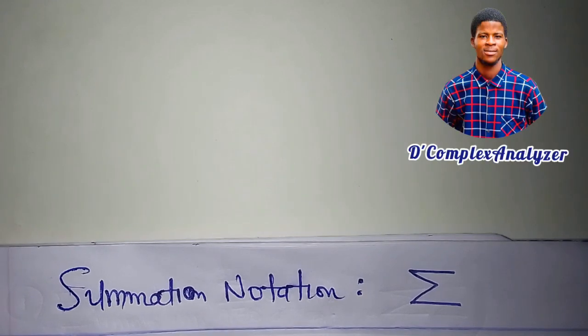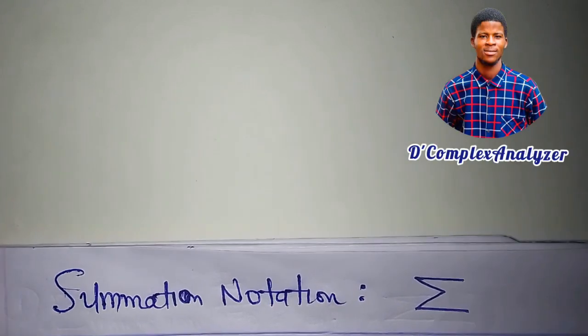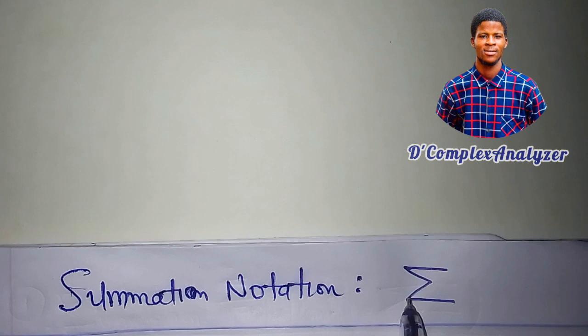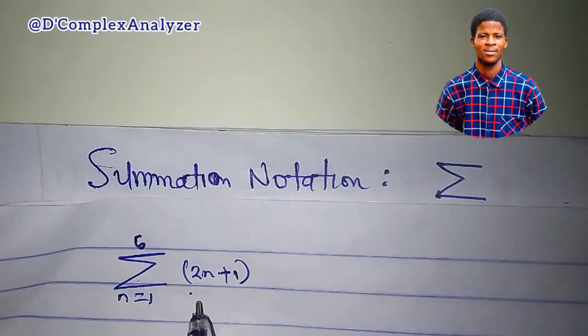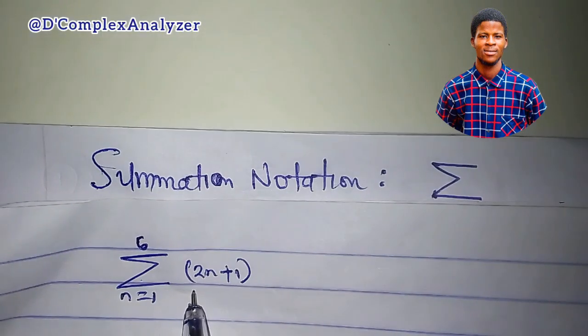In this tutorial, we'll talk about summation notation, that is the Greek sign sigma. Probably you've seen something like this before. How do I read this, for example, if I'm just seeing this for the first time?